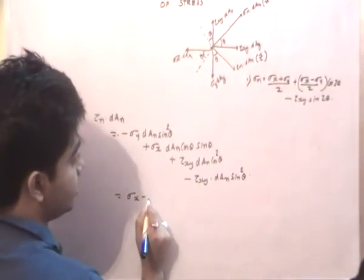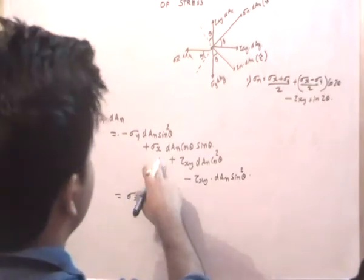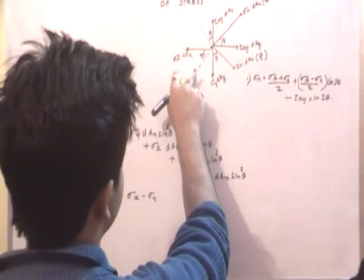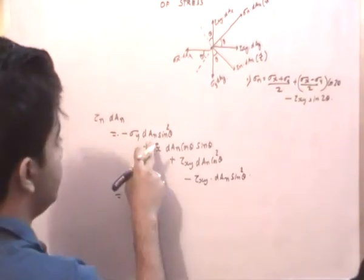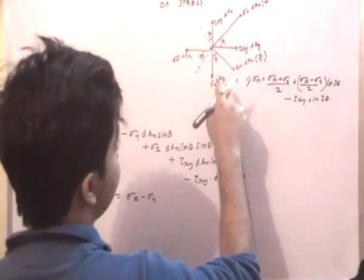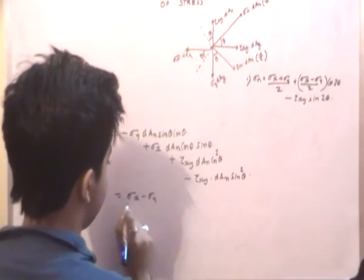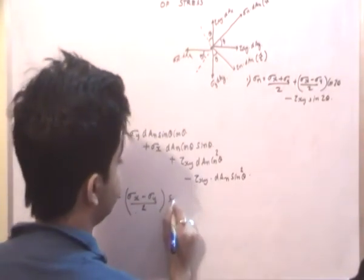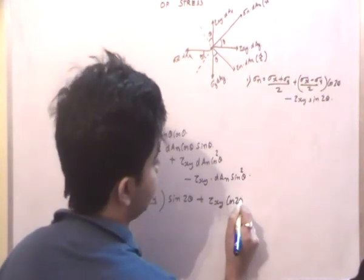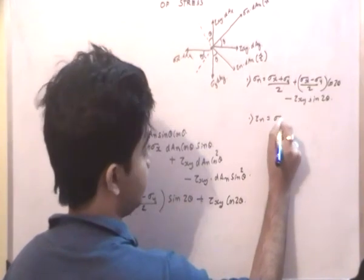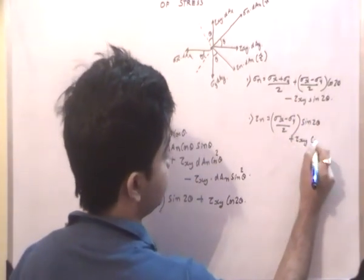Correcting and collecting terms, we have sigma x minus sigma y terms and tau xy terms. With dAy = dAn sin theta and resolving along this direction as cos theta, the result comes out as: tau n = (sigma x − sigma y)/2 · sin 2θ + tau xy · cos 2θ. This is the second equation for the shear stress on the inclined plane.